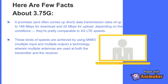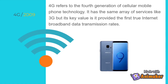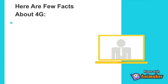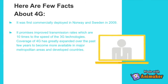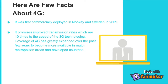4G refers to the fourth generation of cellular mobile phone technology. It has the same array of services as 3G, but its key value is that it provided the first true internet broadband data transmission rates. It was first commercially deployed in Norway and Sweden in 2009. It promises improved transmission rates which are 10 times the speed of 3G technologies. Coverage of 4G has greatly expanded over the past few years to become more available in major metropolitan areas and developed countries.